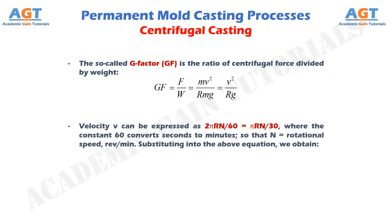Velocity V can be expressed as 2πRN divided by 60, which equals πRN divided by 30, where the constant 60 converts seconds to minutes, so that N represents rotational speed in revolutions per minute.